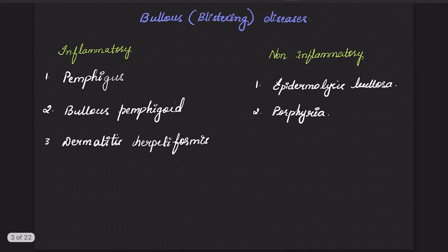These bullous diseases can be classified into inflammatory and non-inflammatory conditions. Under the inflammatory conditions, we have the pemphigus group, which we will study in this part, and bullous pemphigoid and dermatitis herpetiformis. Under the non-inflammatory diseases, we have epidermolysis bullosa and porphyria.